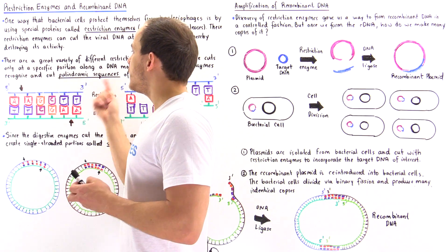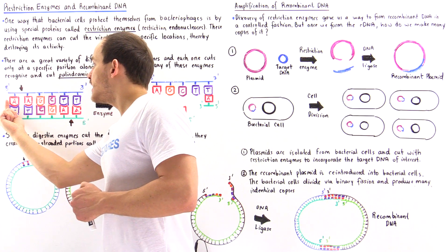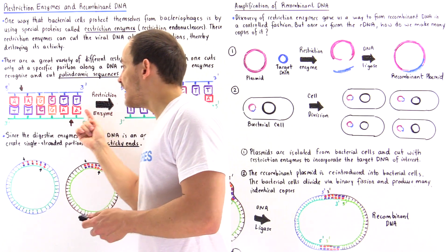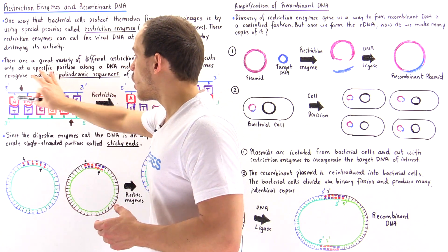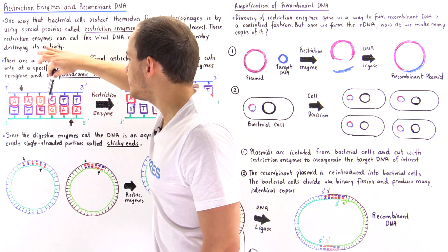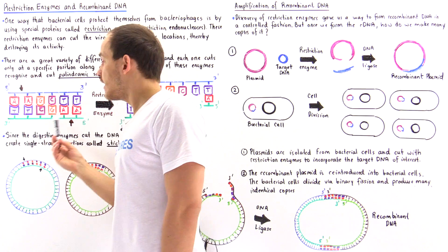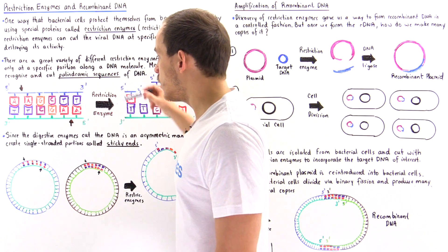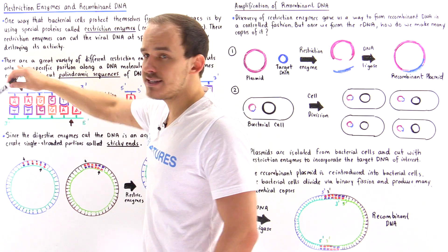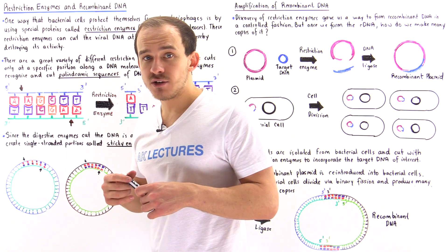What we mean by palindromic sequences of DNA is: if we read these bases going one way, we get the same exact reading if we go backwards. Going along the blue single strand, we have A-A-G-C-T-T, and going in the opposite direction along the green strand, we also get A-A-G-C-T-T. That's exactly what we mean by a palindromic sequence.